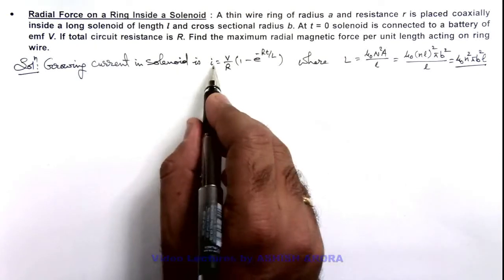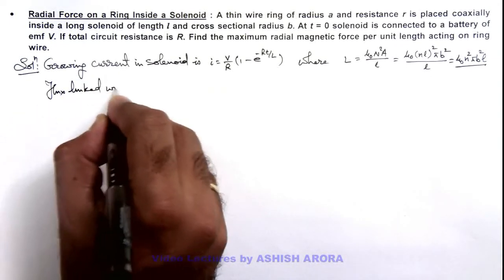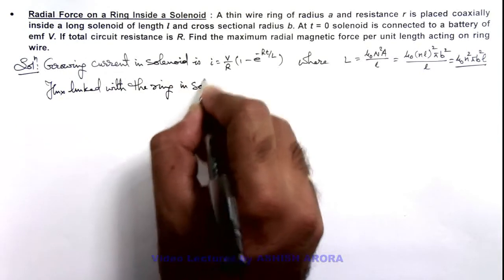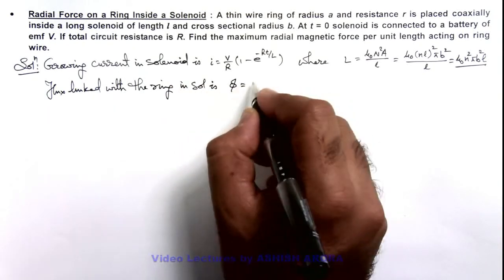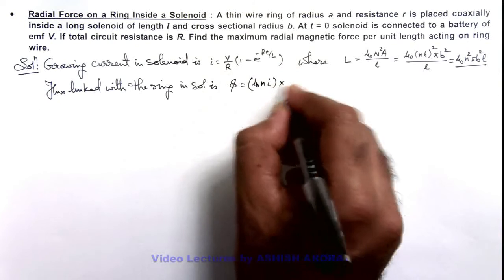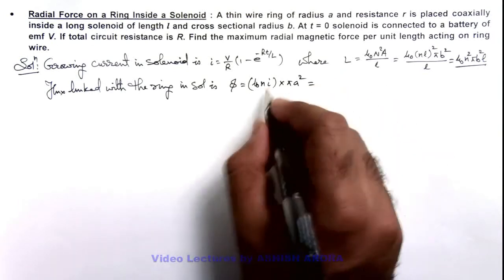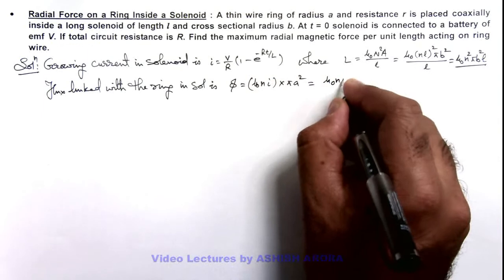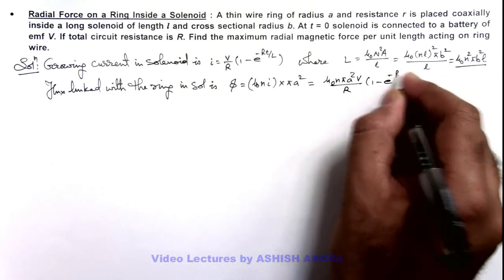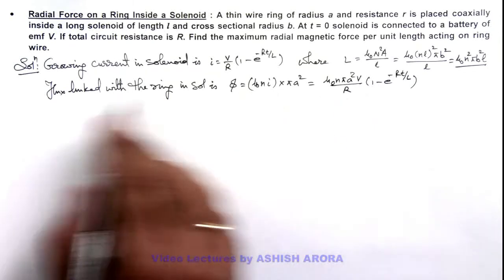With this current in the solenoid, we can calculate the flux linked with the ring. The magnetic induction due to this current is μ₀ni, so the flux is μ₀n·πa² multiplied by (V/R)·(1 minus e to the power minus Rt/L), where πa² is the cross-sectional area of the ring.